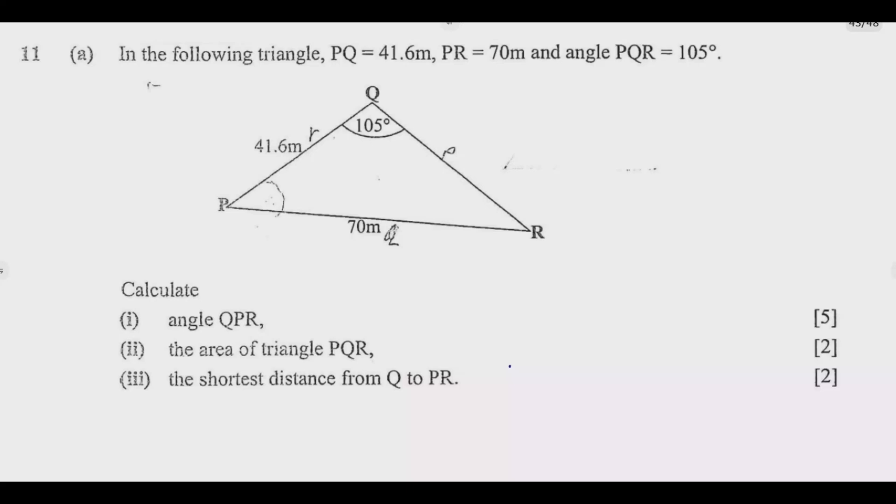Let us look at question 11. In the following triangle, PQ equals 41.6 meters, PR equals 70 meters, and angle PQR equals 105 degrees. Calculate: number 1, angle QPR; number 2, the area of triangle PQR; number 3, the shortest distance from Q to PR.